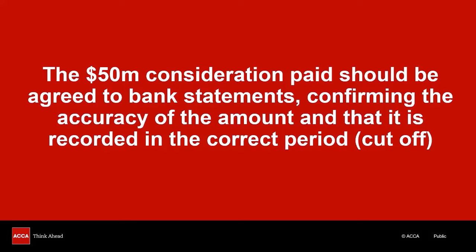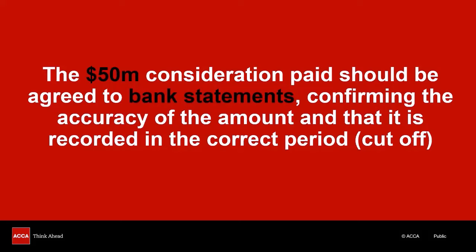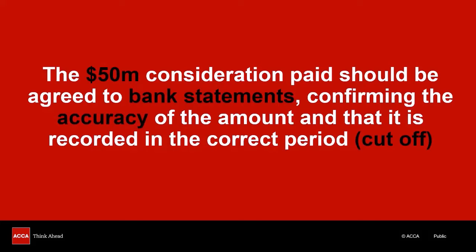Here's a decent audit procedure showing on screen — pause the recording here and have a read of it. I'm going to pick out the three key parts. The first is a fact from the scenario: a $50 million payment. The next is evidence — ideally third party — and here that's the bank statements. Then an explanation of the test: confirming the accuracy of the $50 million amount and the date it was paid to confirm cutoff. That's an excellent audit procedure because it ticks all three boxes and is therefore likely to score a full mark.